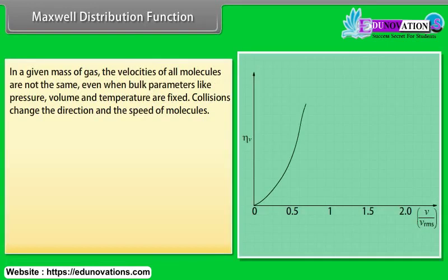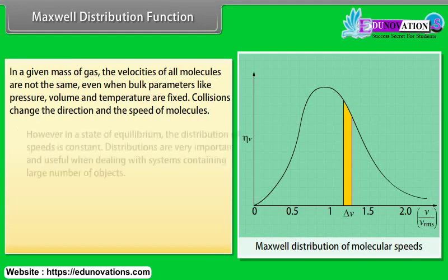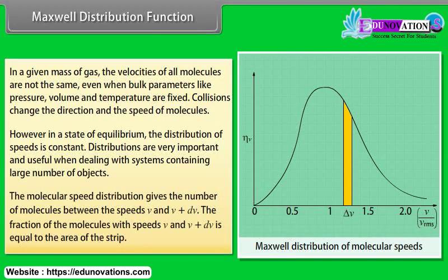Maxwell distribution function: In a given mass of gas, the velocities of all molecules are not the same even when bulk parameters like pressure, volume and temperature are fixed. Collisions change the direction and the speed of molecules. However, in a state of equilibrium, the distribution of speed is constant. Distributions are very important and useful when dealing with systems containing large number of objects. The molecular speed distribution gives the number of molecules between the speeds V and V plus DV. The fraction of the molecules with speeds V and V plus DV is equal to the area of the strip.